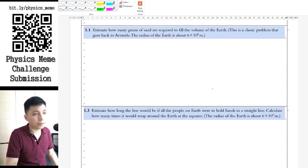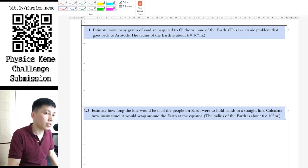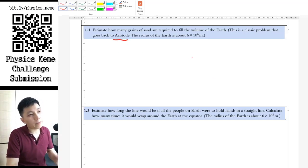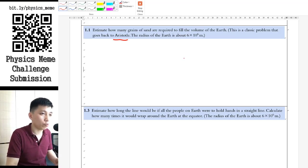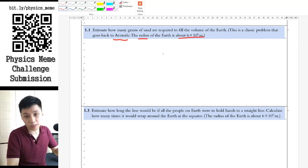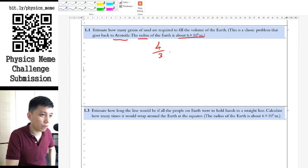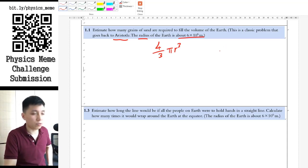Without further ado, let's try the first example together. This is a classic problem back to the Aristotle time. They were thinking about how many grains of sand would be needed to fill up the whole volume of the earth. So you have got the radius of the earth already, which obviously you can use the volume of a sphere, which is an assumption, which is good enough. So 4 over 3 pi r cubed will be the volume of the earth.